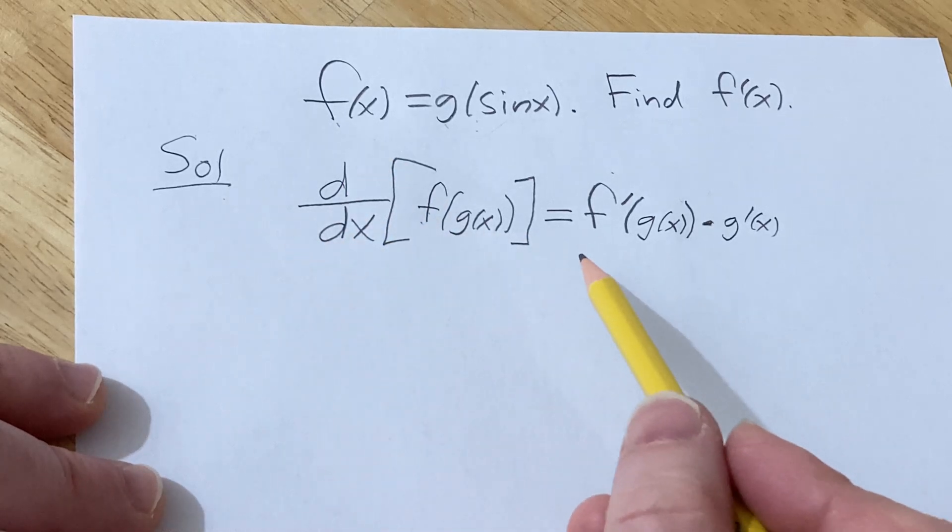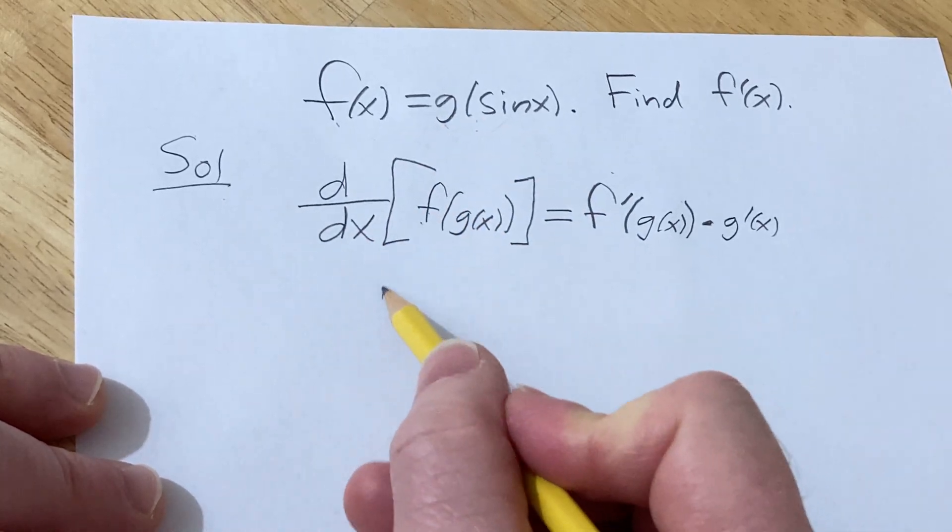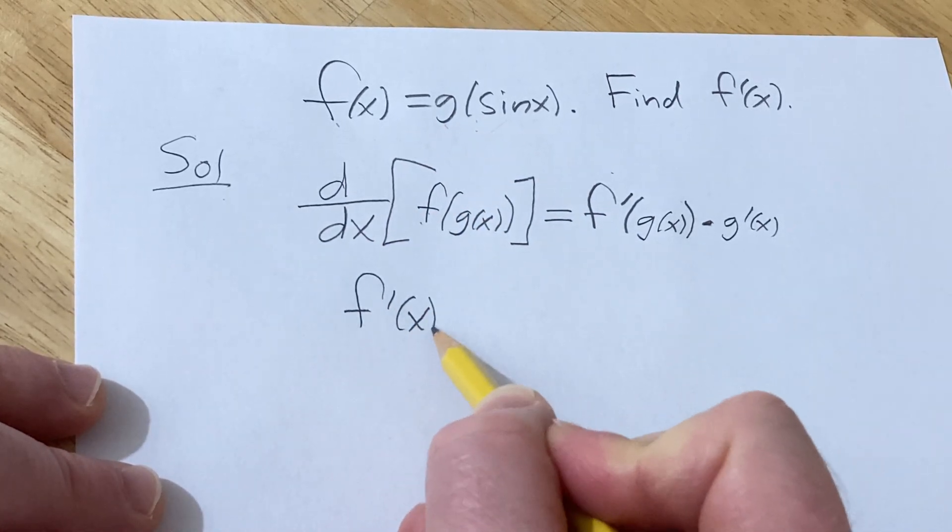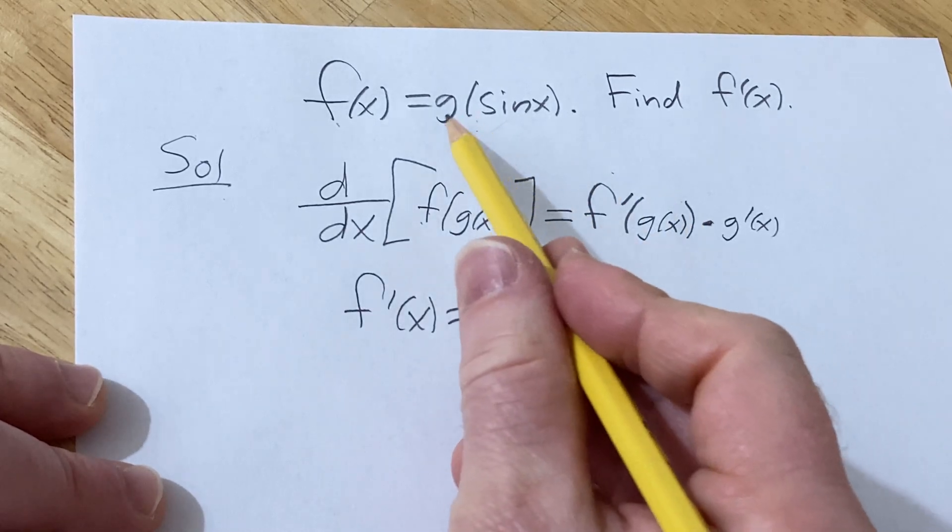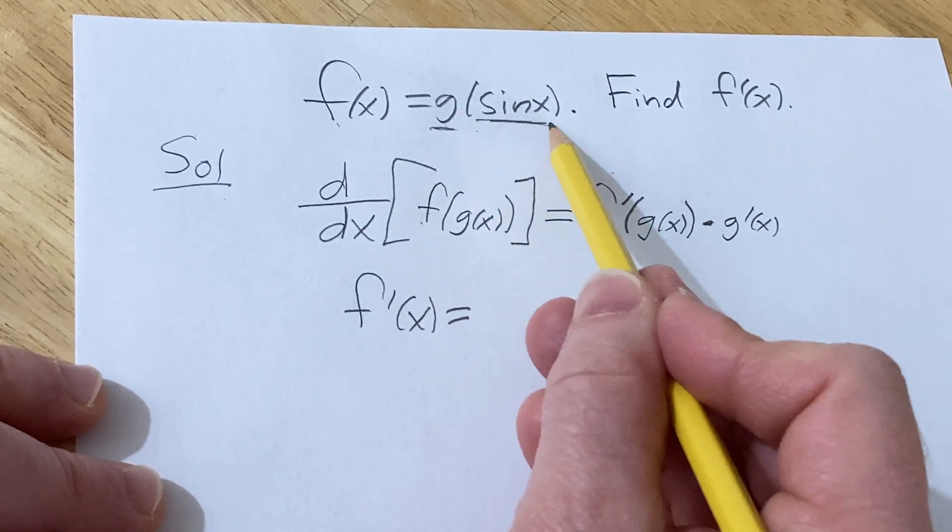All right, so now we're going to apply this formula to this particular problem. So f'(x) equals, so here g is our outside function and sin is our inside.